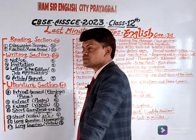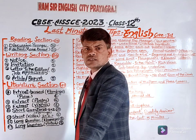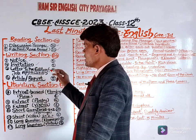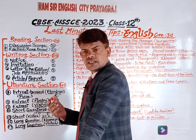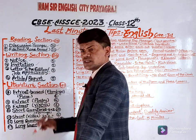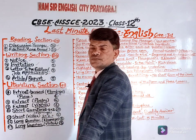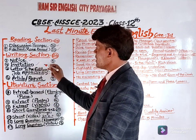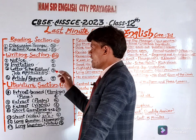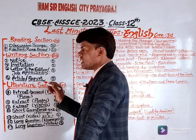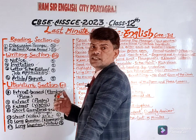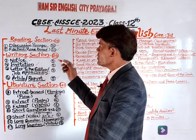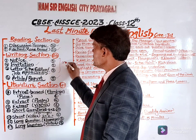The second section is writing, which contains 20 marks. It includes notice writing, invitation, letter writing, letter to the editor, or application for a job — you have to attempt any one, each worth 5 marks. Next is article or report writing — you have to attempt any one, worth 5 marks. So your writing section is also 20 marks.